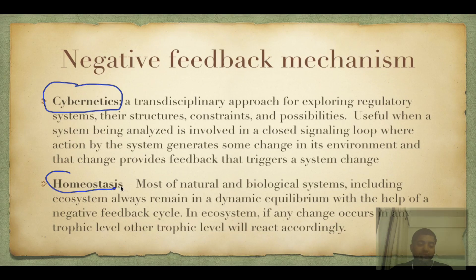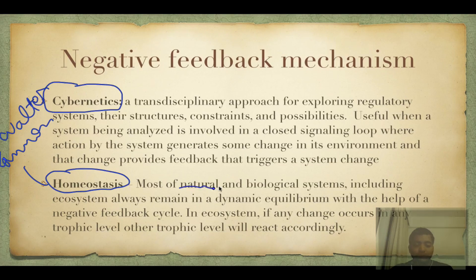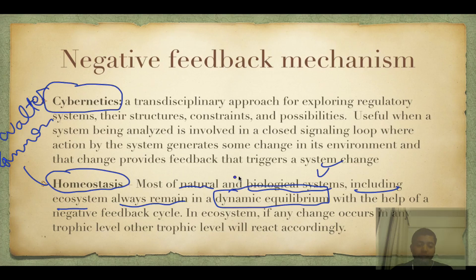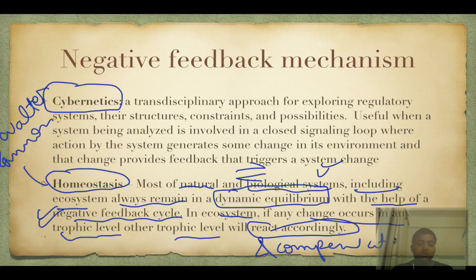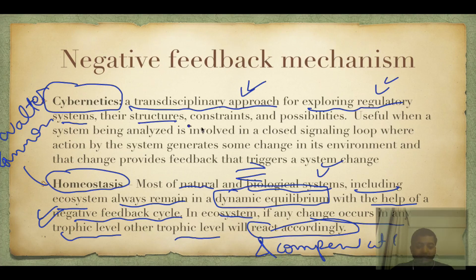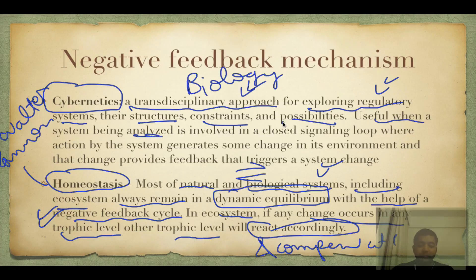There are two studies of negative feedback. Homeostasis is the first term, given by Walter Cannon. Most natural and biological systems including ecosystems always remain in dynamic equilibrium — this is the most important part. Dynamic equilibrium with constant give and take takes place with the help of a negative feedback cycle. In an ecosystem, if any change occurs in any trophic level, other trophic levels will react and compensate accordingly. Cybernetics is a transdisciplinary approach for exploring regulatory systems — their structures, constraints, and possibilities — applied to biology, engineering, mathematics, and more.